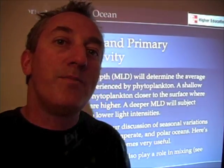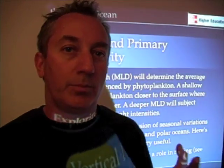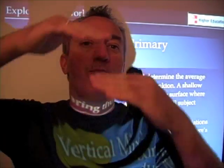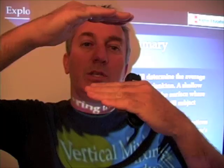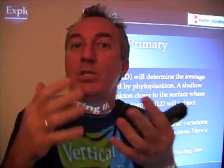The next thing we want to talk about is the mixed layer and its influence on primary productivity. You'll recall from our discussion in Chapter 7 that the mixed layer is that region of the upper ocean in which the water is mixed. It's all homogeneous.